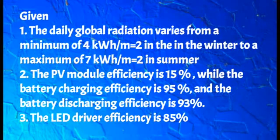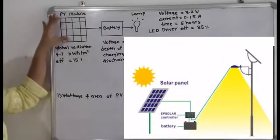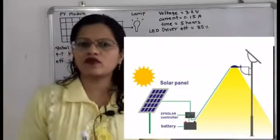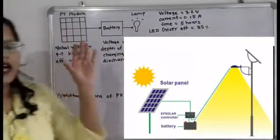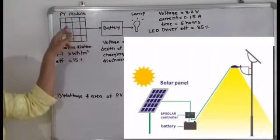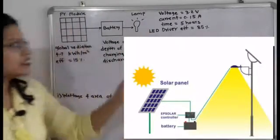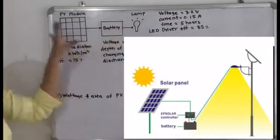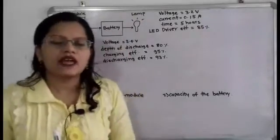Let us first understand the given configuration. Here is the photovoltaic module — the sun's rays come to this PV module and are converted into electrical energy. This electrical energy is stored in the battery, which is then used to light the LED lamp. So the configuration is: photovoltaic module, then the battery, and then the lamp.